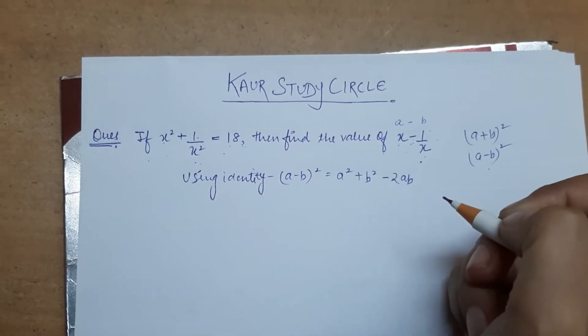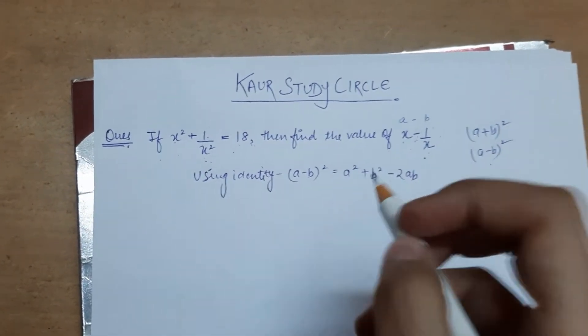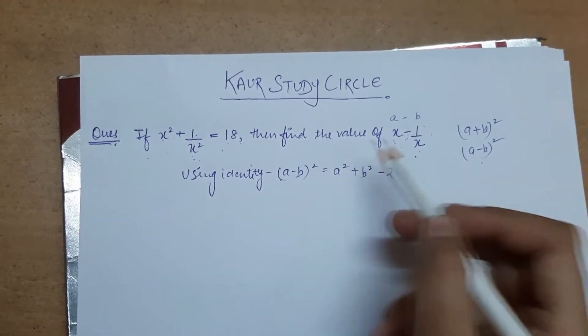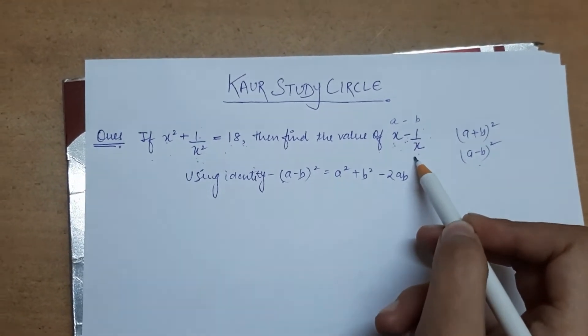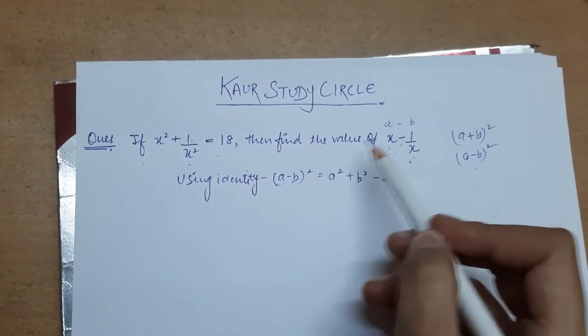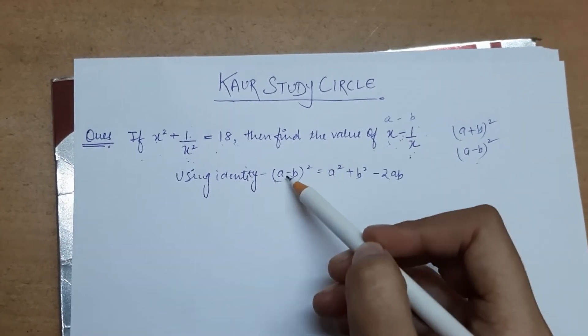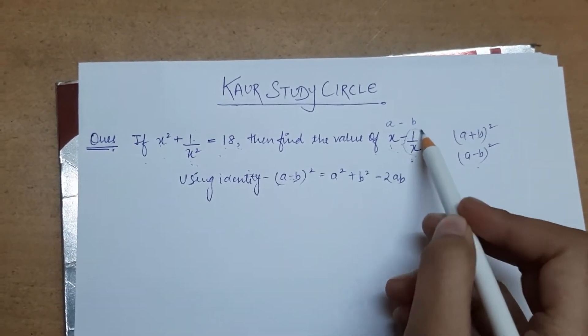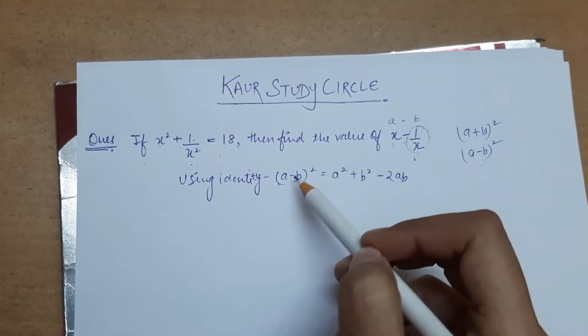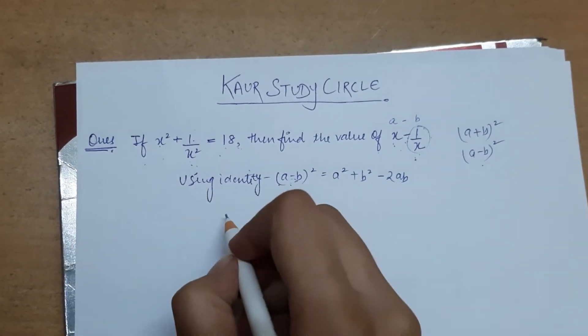So we know this identity, it's class 9. Now we know that the value of a is x and the value of b is 1 by x. Why are we not saying it is negative 1 by x? Because minus sign is already here in the identity. If minus sign is already there, you consider only the value, not the negative sign.